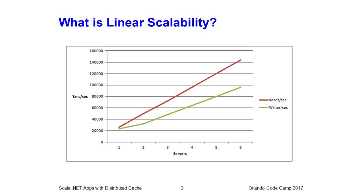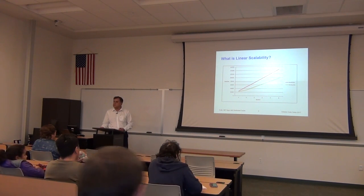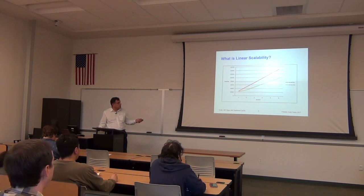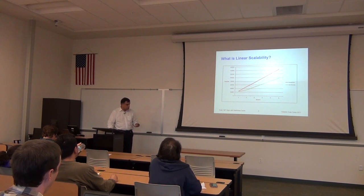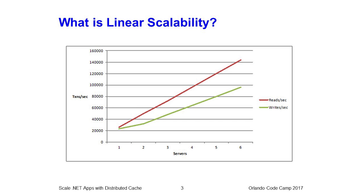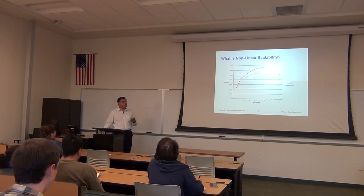Linear scalability means your application is architected so that you can add more servers and by adding more servers you increase transaction capacity — how many users, how many transactions per second your application can handle. If your application handles linearly more transactions as you add more servers, you're linearly scalable, and that is our goal. Non-linear scalability means that after a certain point, adding more servers doesn't help — performance actually drops, meaning there are bottlenecks that have not been addressed.